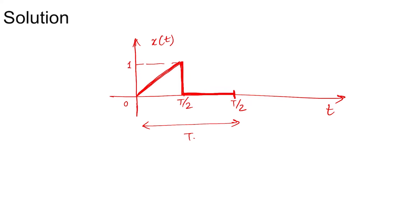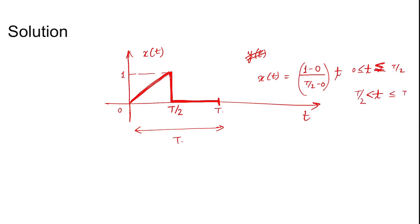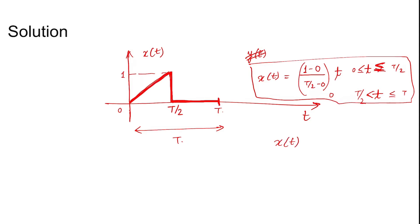We take the square of the signal and find the area under it. Writing the equation of the signal: x(t) equals (1 minus 0) divided by (T/2 minus 0) times t, for t in the open interval 0 to T/2, and it is 0 otherwise. So for the linear part, x(t) equals 2t over T. As you can see, at t = T/2 the value is 1, and at t = 0 the value is 0.